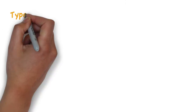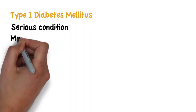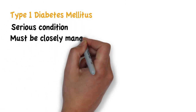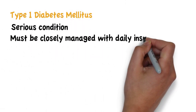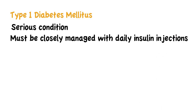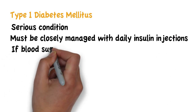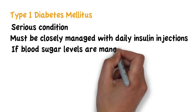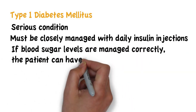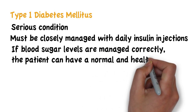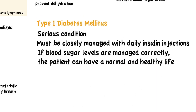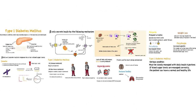Type 1 diabetes is a serious condition that must be closely managed with daily insulin injections. If blood sugar levels are managed correctly, the patient can have a normal and healthy life. Thank you for watching this video.